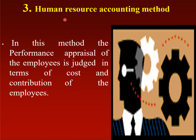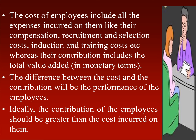The third modern method is the human resource accounting method. Here, the employee is judged in terms of cost and contribution. Cost means expenses incurred by the company on compensation, recruitment and selection, induction and training, etc. Contribution includes the total value added by the employee in monetary terms — the productivity of the person. Performance equals the difference between contribution and cost. Ideally, the contribution of the employee should be greater than the cost incurred on them.